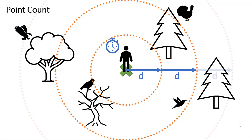An alternate type is the variable radius point count. In this case, you can count any bird that you detect — if you see or hear it, you can count it — but now you need to estimate the distance to that bird. The reason is that you can still use this to determine densities using fairly elaborate calculations that take into account how easily detectable the bird is. Large or very prominent birds that are singing or making a lot of motion might be detected from farther away than quiet or secretive birds detected over a smaller radius. You'd still want a standard survey time.